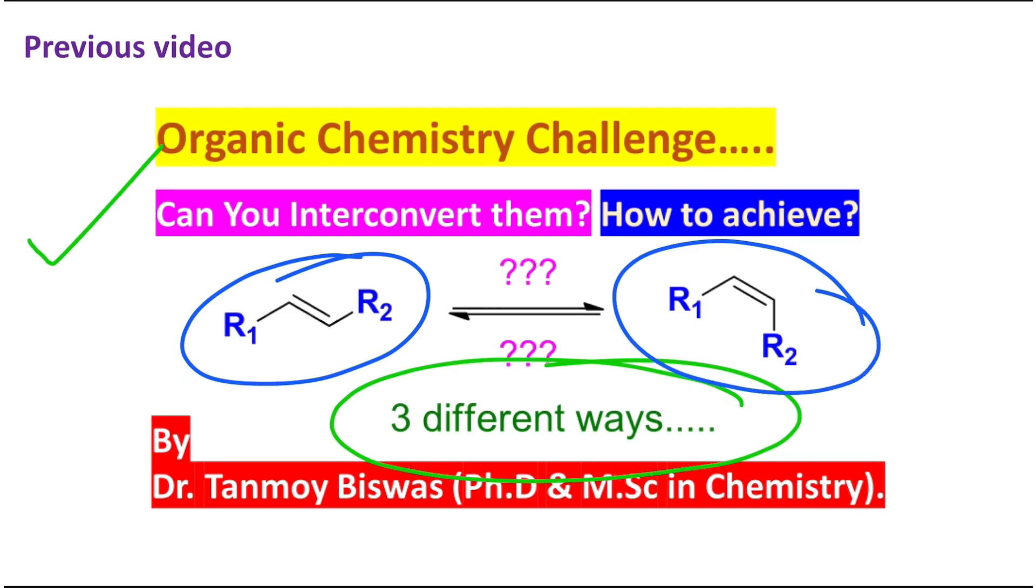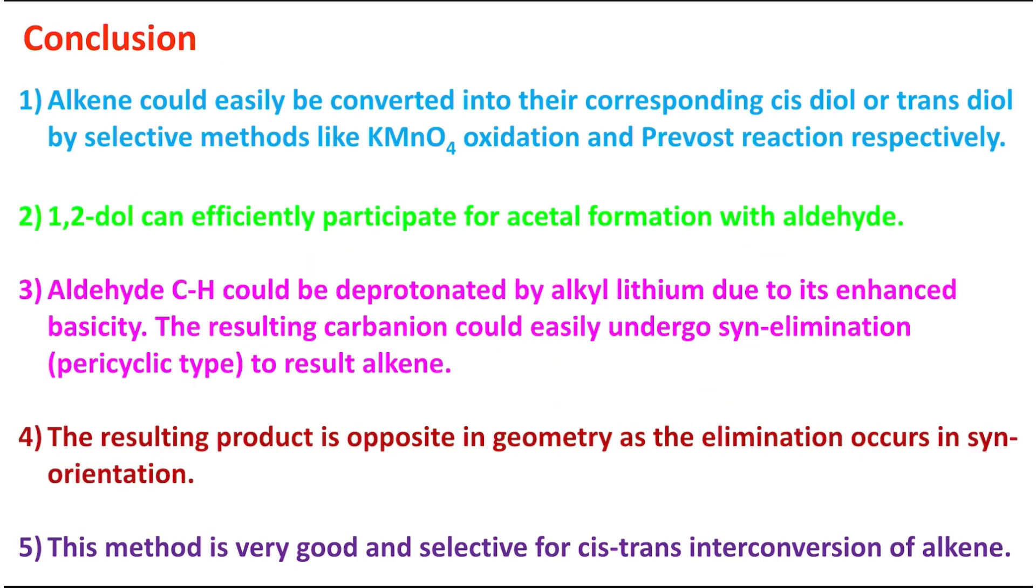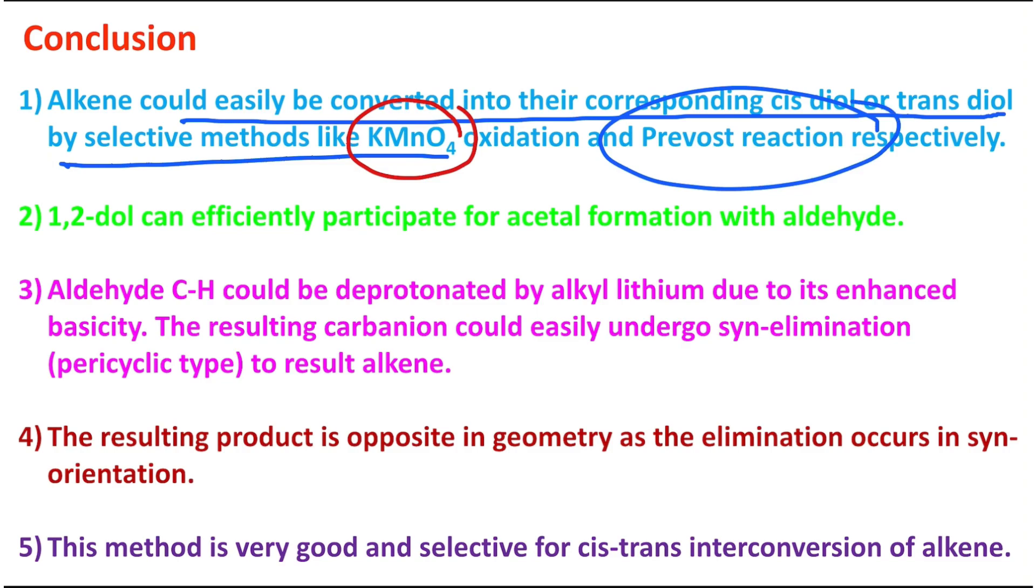In conclusion, what have you learned today? Alkenes could easily be converted into their corresponding cis diol or trans diol by selective methods. For example, if you want to prepare cis diol, then KMnO₄ oxidation, osmium tetroxide oxidation, etc. are very important. Or if you want to make trans, then Prévost reaction - I've already discussed this reaction previously. 1,2-Diol can efficiently participate in acetal formation with aldehyde because of chelation effect, or you may consider five-member ring formation.